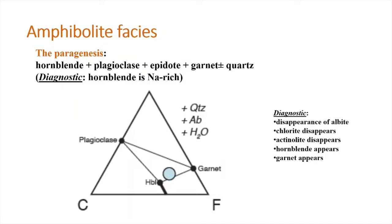Next comes the amphibolite facies. As metamorphic grade increases, amphibole becomes stable and hornblende appears. The diagnostic paragenesis is hornblende + plagioclase + epidote + garnet + quartz; the hornblende is normally sodium-rich. The characteristic changes are: albite disappears, chlorite disappears, actinolite disappears and is replaced by hornblende, and garnet appears — these are the changes from greenschist to amphibolite facies.